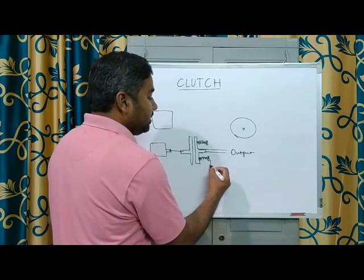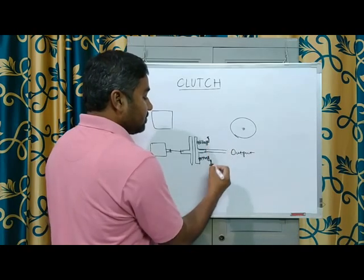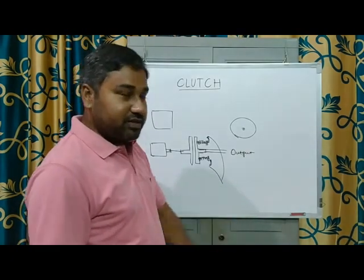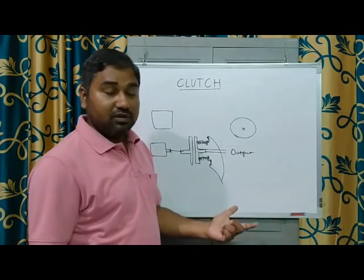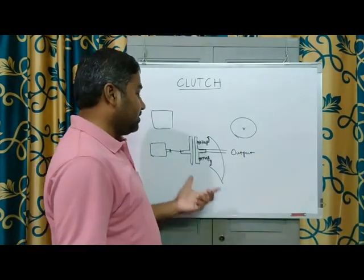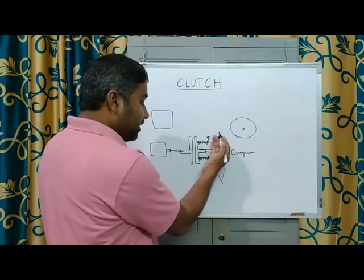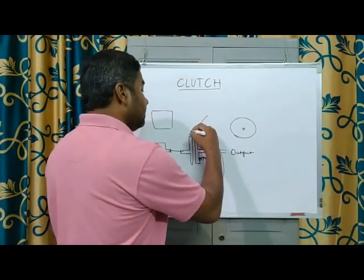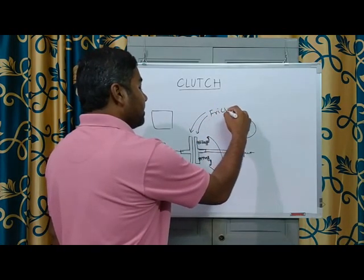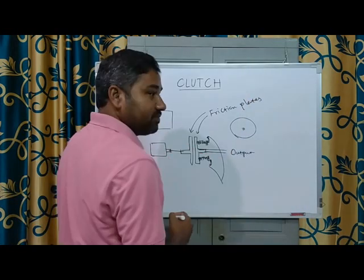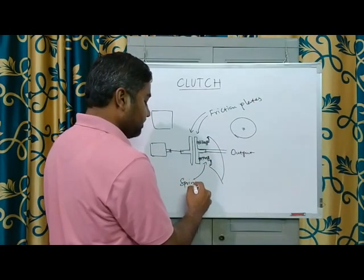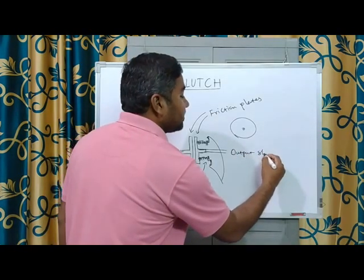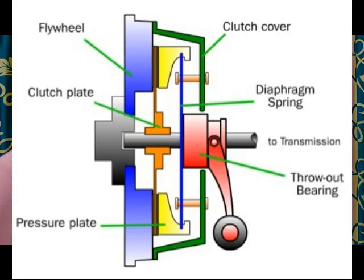We also make use of levers, and these are connected through cables which you operate with either your hand or legs. When you press them, the plate is pulled away, so even though the engine is running the vehicle slows down — it is static. Now if you want to engage it, simply release it, so this will go and press against the friction plate and all the output will be available. These are called friction plates, these are springs, this is the engine, and this is the output shaft — this is how the clutch works.